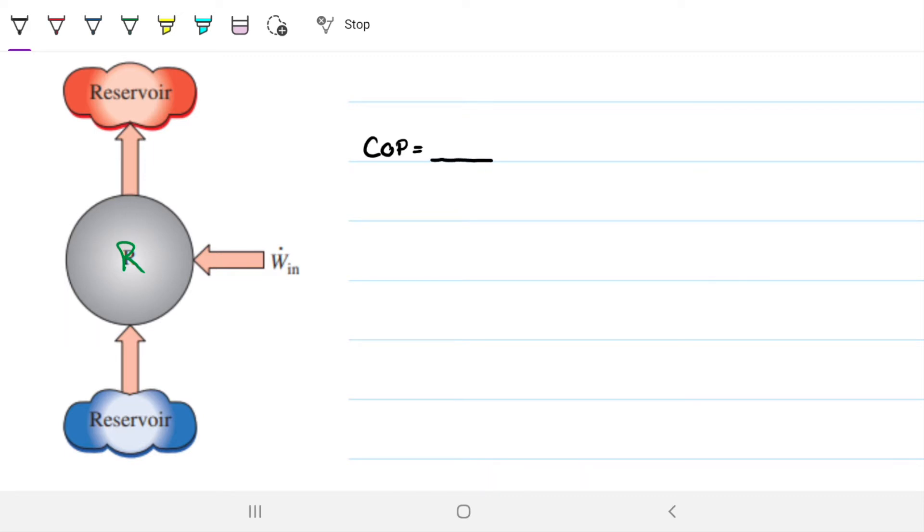It's what we want divided by what we put in, what we desire divided by what we pay, what we have to consume. So our desired output divided by what was consumed.